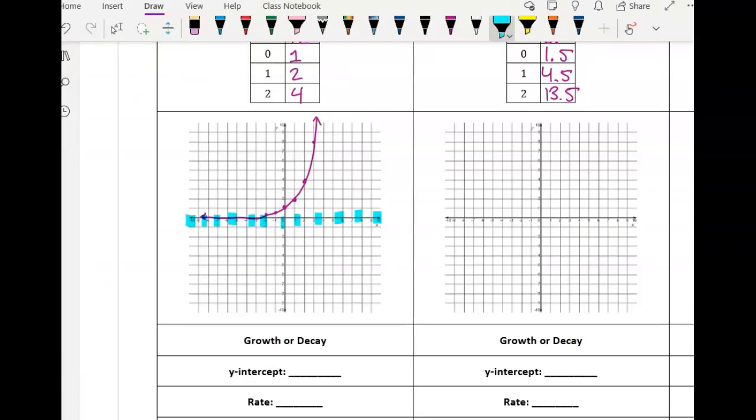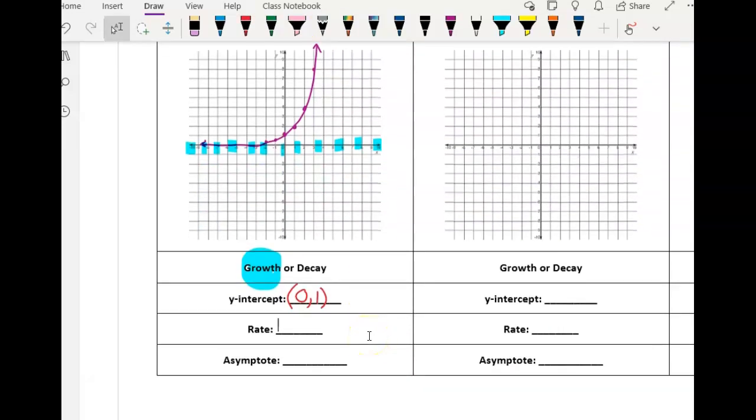And so now we're going to take a look. Is this a growth or decay? Well, if we think about the plane analogy, it's taking off. So as my X values are increasing, my Y values are also increasing. So it's a growth. My Y intercept, I can see it on the graph and from the table. My Y intercept is 0, 1. And my asymptote, we just saw it in the table and on the graph. My asymptote is Y equals 0.